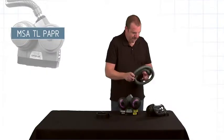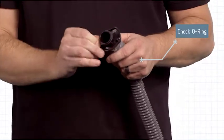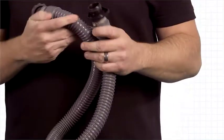Next, inspect the breathing tube by checking that the O-ring is in place. Physically inspect the breathing tube to make sure that it is free from cracks and holes.